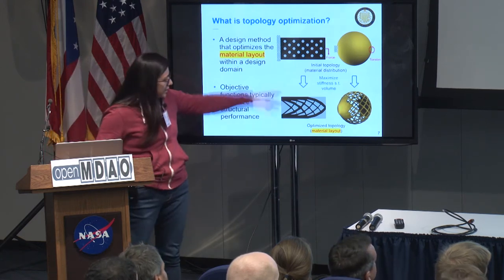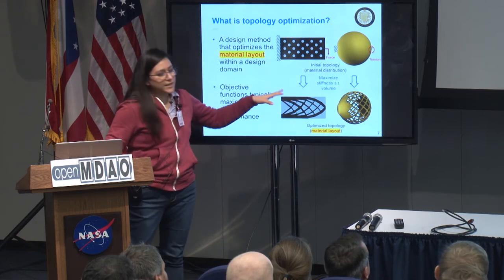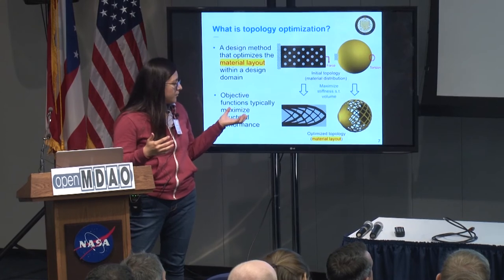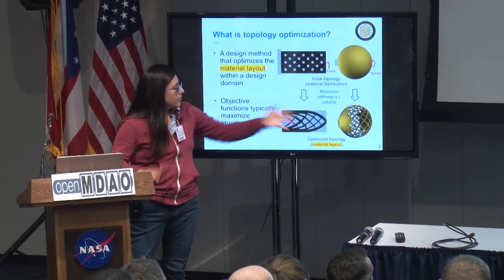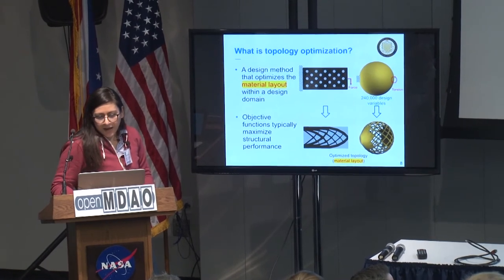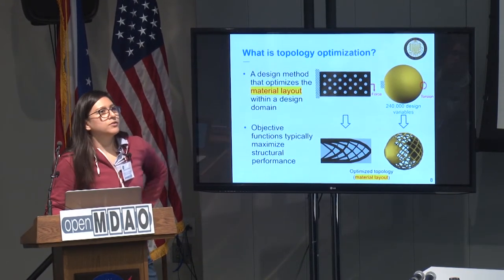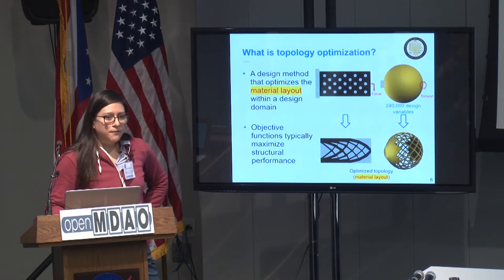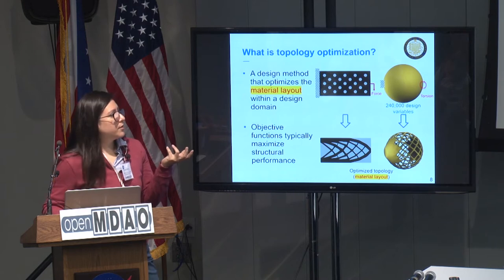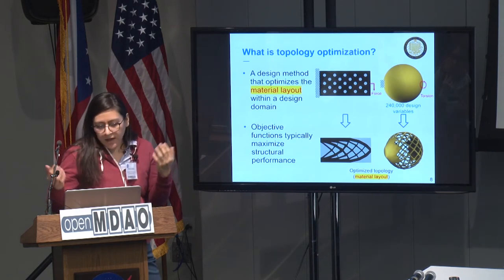You end up with the optimized topology - the optimized material layout. In this 2D example, that's where material should be. In the 3D problem, we have a nice torsion result. For the 3D problem, we have about 5 million finite elements, which translates to 240,000 design variables. That's what large-scale means to us.